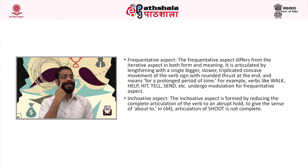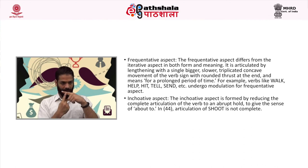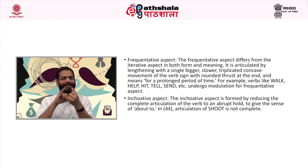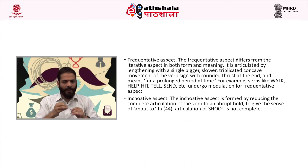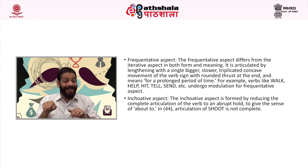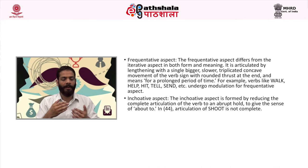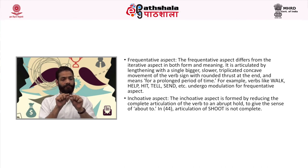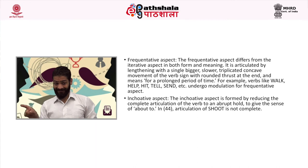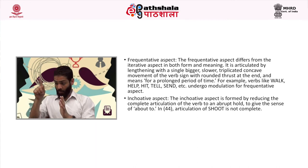The next aspect is inquisitive aspect. The inquisitive aspect is formed by reducing the complete articulation of the verb to an abrupt hold to give the sense of about to. For example, 'Uday was about to shoot Dharmesh, Sibhaji caught him' — the sign would be: past, Dharmesh, Uday, shoot (in inquisitive aspect), Sibhaji, catch. Here, shoot would be in inquisitive aspect as the articulation of shoot is not complete.